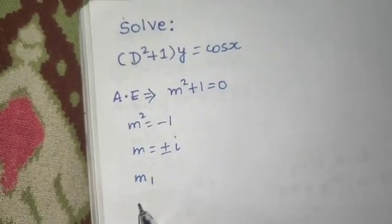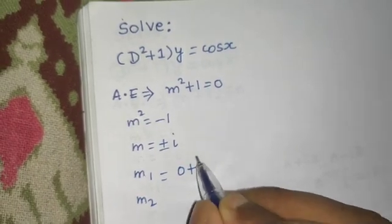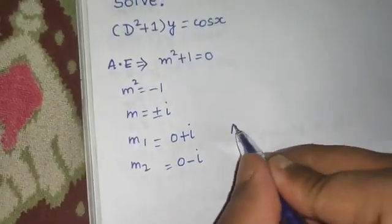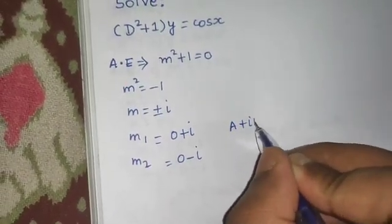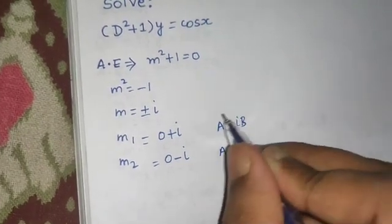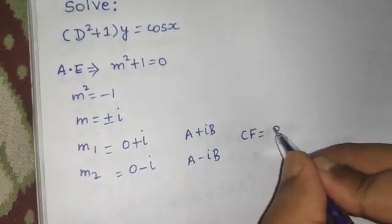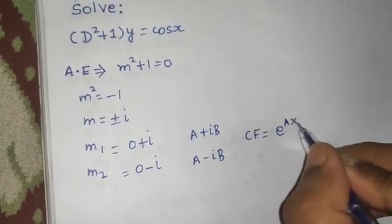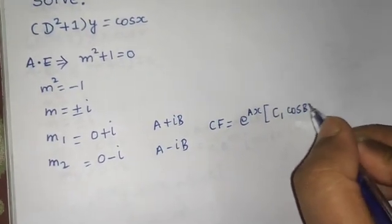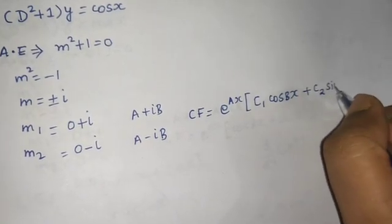Writing separately, m1 and m2: m1 will be zero plus iota, m2 will be zero minus iota. This is clearly of the form a plus iota b and a minus iota b. In this case, your complementary function is e^(ax) times (c1 cos(bx) plus c2 sin(bx)).